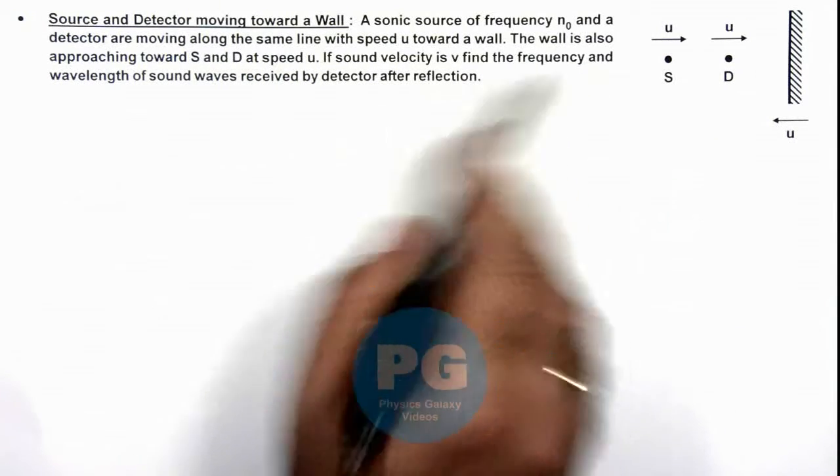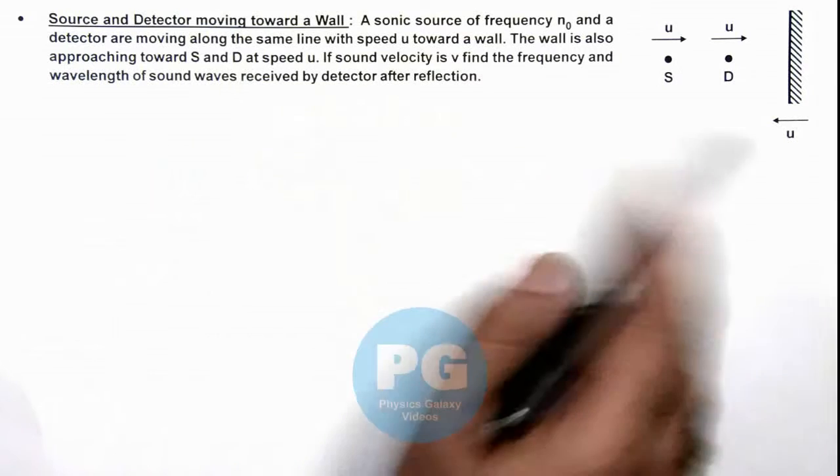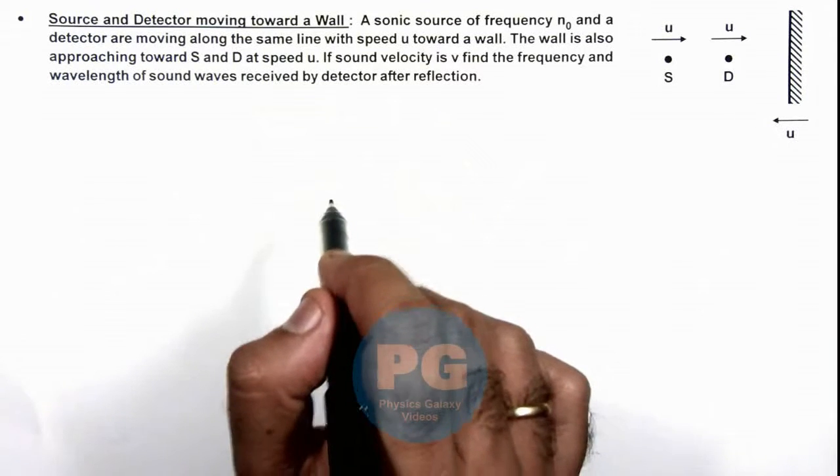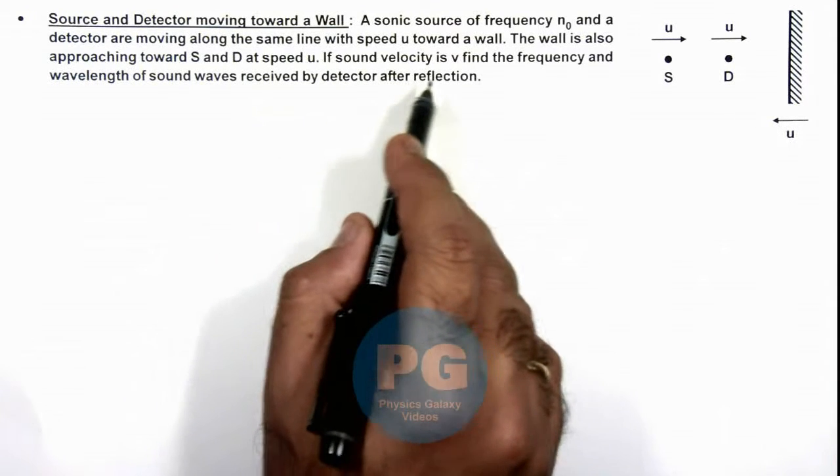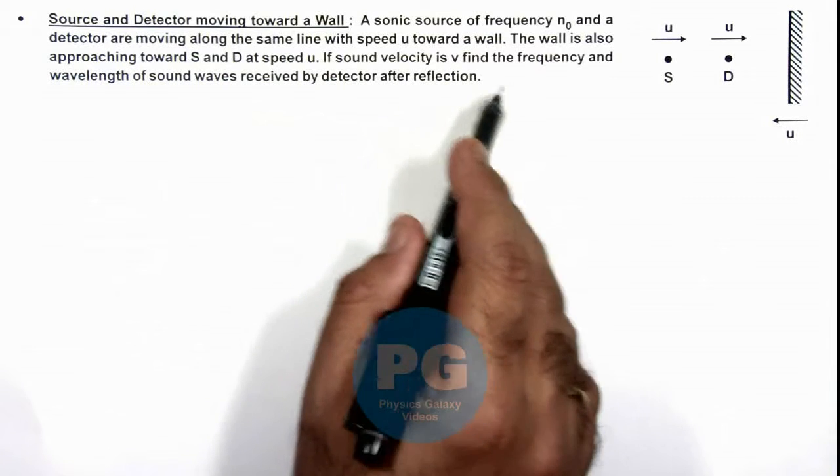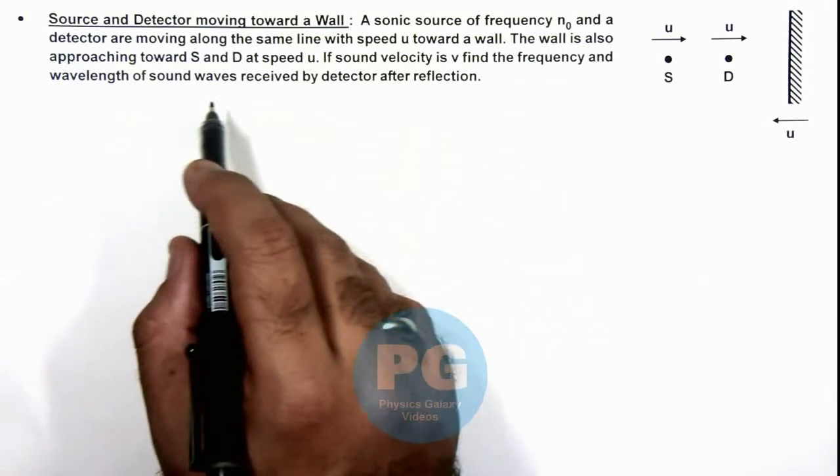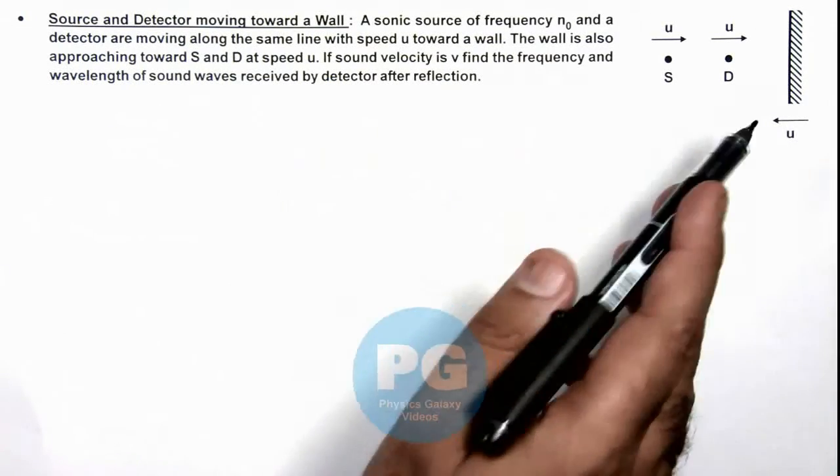And the wall is also approaching toward source and detector at speed u. If sound velocity is v, we are required to find the frequency and wavelength of sound waves received by detector after reflection.